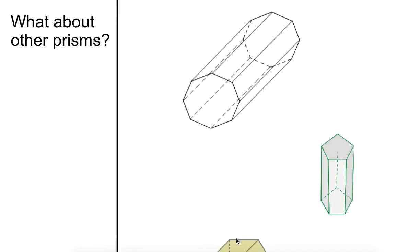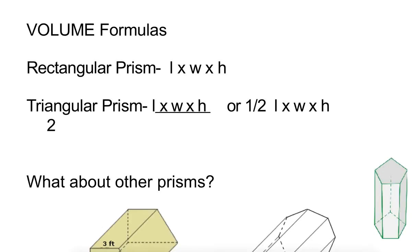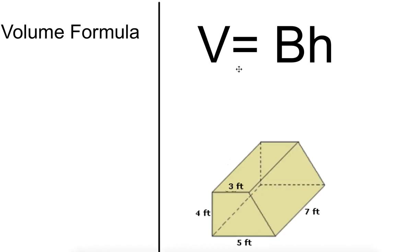What about these kind of prisms? Now, 6th grade standard says you only have to do rectangular and triangular. But I just want you to look at these. If that's the case, we'd have to know different formulas for every single one. But here's the cool thing about prisms, is you can use this formula for all prisms.